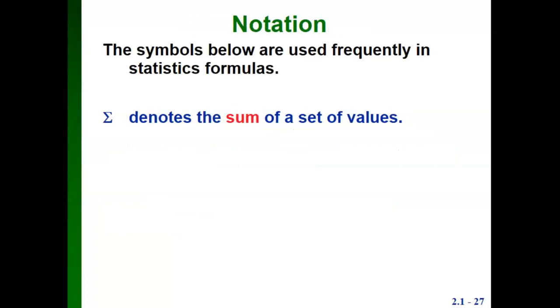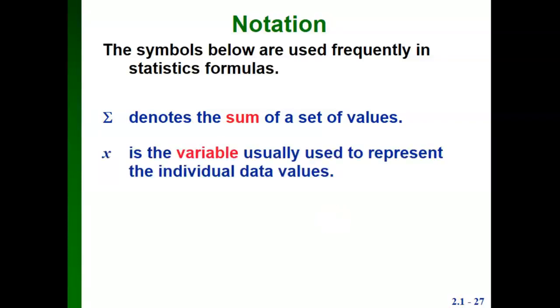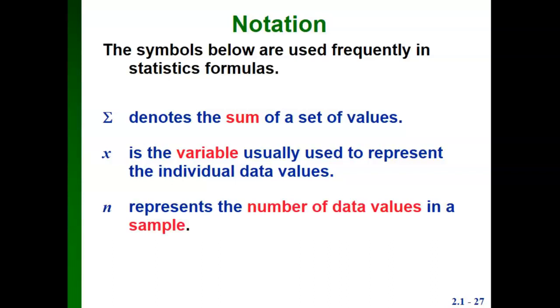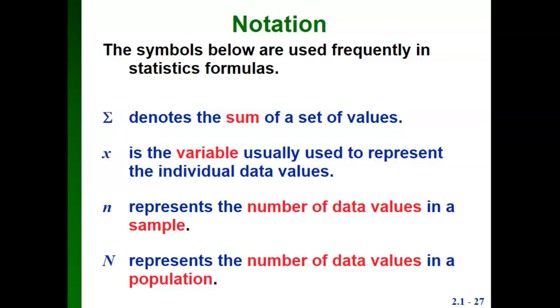I'm going to show you some formulas. For the most part we're not going to use these formulas, because we'll either be using a calculator or statistical software like StatCrunch. But it's good to know what the symbols mean. This is a Greek capital sigma, which denotes the sum of a set of values. X is the variable that represents the individual data values. N represents the number of data values in a sample, and capital N represents the number in an entire population.